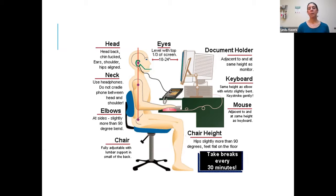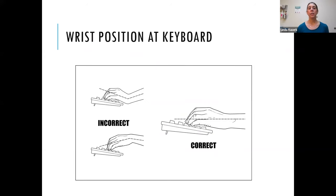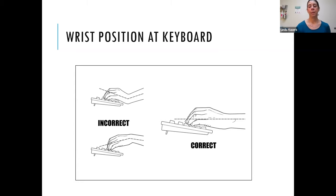When using the mouse, you want your wrist in a neutral position with elbows at about 90 degrees. The keyboard should be the same height. If you have to look down at a document, a document holder at the same height as the monitor is helpful. The correct wrist position at the keyboard is neutral — not too extended or too flexed. A neutral wrist position puts the least stress on the wrist and forearm muscles.